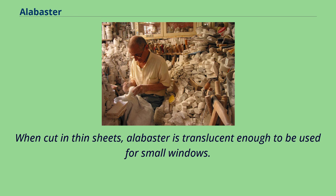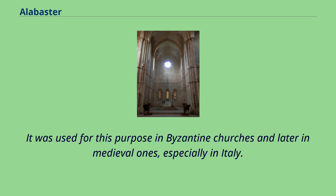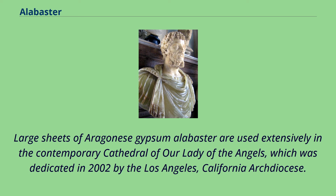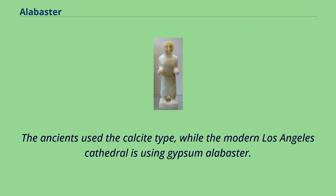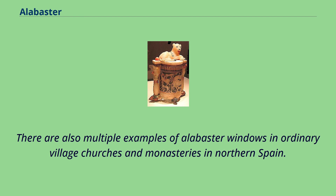When cut in thin sheets, alabaster is translucent enough to be used for small windows. It was used for this purpose in Byzantine churches and later in medieval ones, especially in Italy. Large sheets of Aragonese gypsum alabaster are used extensively in the contemporary Cathedral of Our Lady of the Angels, dedicated in 2002 by the Los Angeles, California Archdiocese. The cathedral incorporates special cooling to prevent the panes from overheating and turning opaque. The ancients used the calcite type, while the modern Los Angeles Cathedral is using gypsum alabaster.